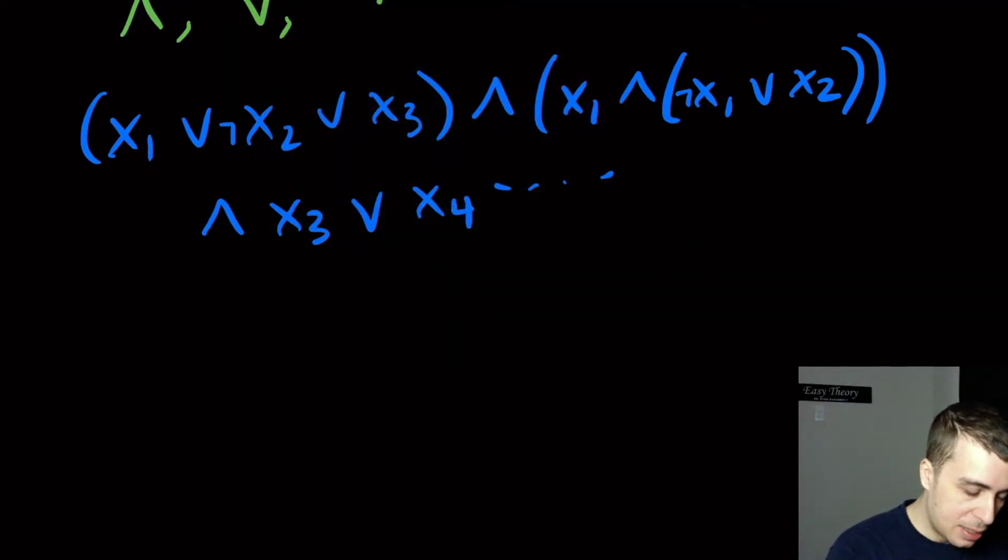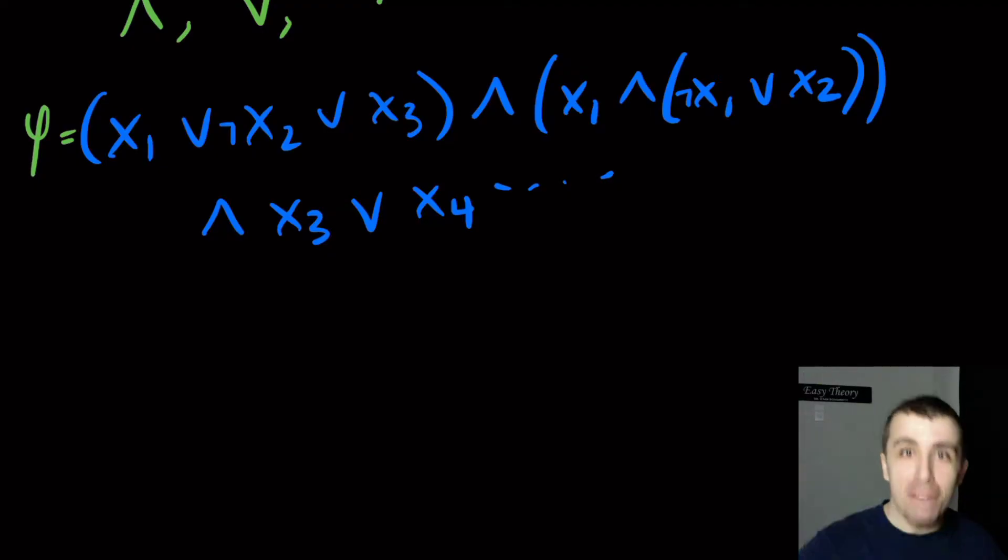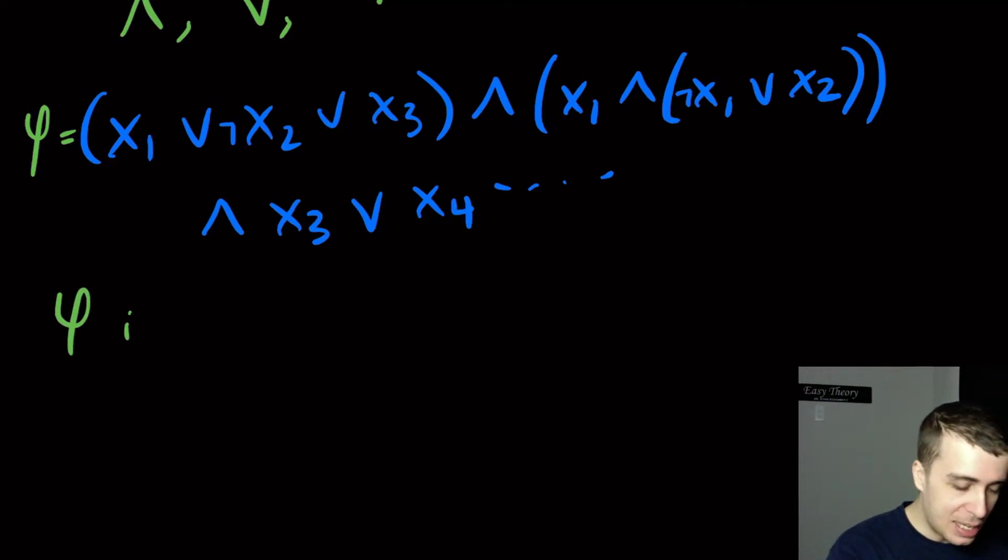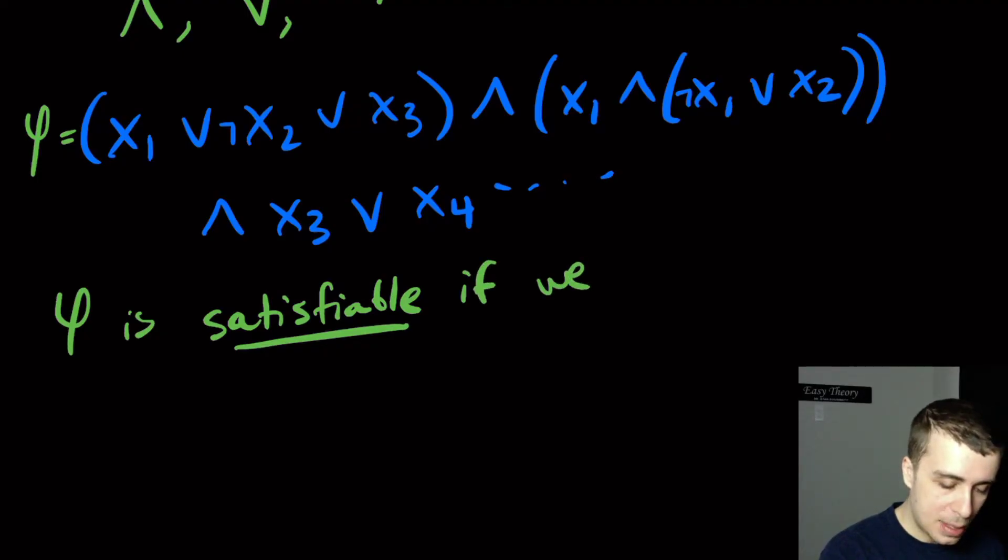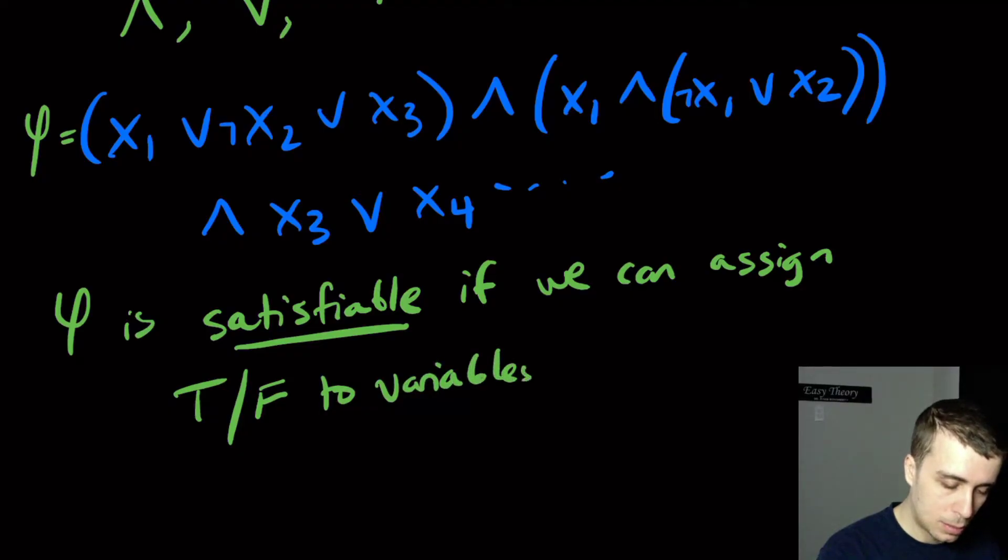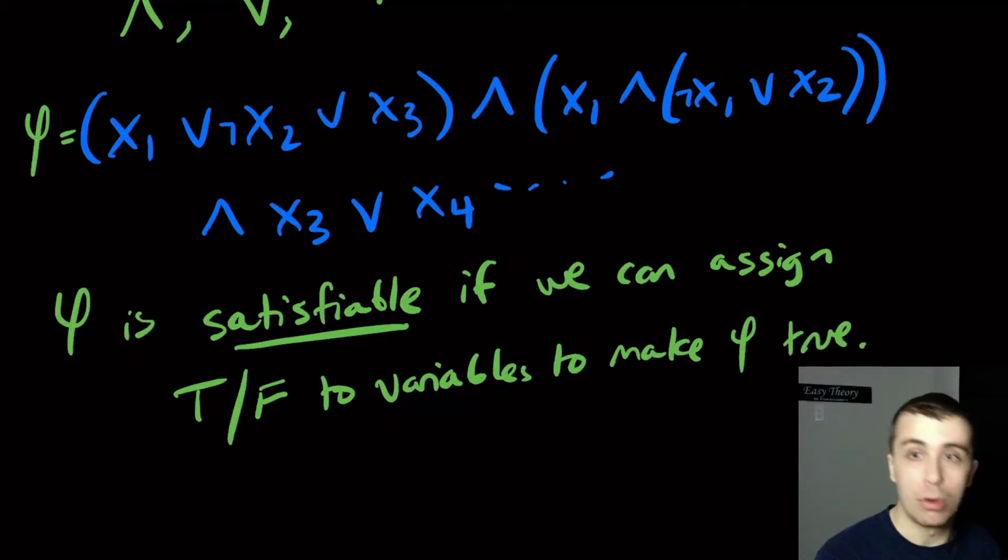Let's call this formula psi. I know it looks like the empty set, maybe I should use a different symbol. Let's do psi, which is close but it's a psi, not a phi. We say that this psi is satisfiable if we can assign a true or false to variables to make psi true or evaluate to true.